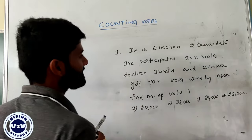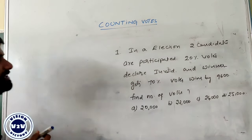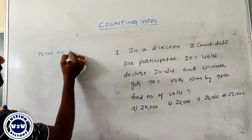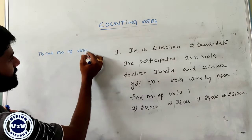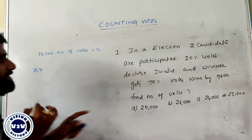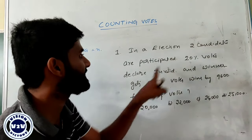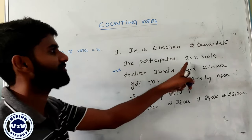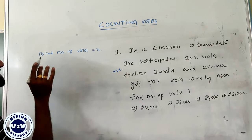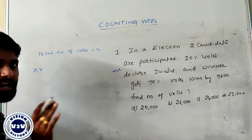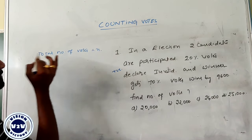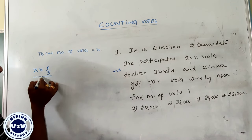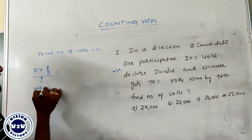In an election between two candidates, 20 percentage votes are declared invalid. First of all, the total number of votes we need to find is equal to x. Out of x, 20 percentage votes declared invalid means we need to consider only 80 percentage for the counting part. So 80 percentage becomes 4 by 5. X is the number of votes and four-fifths of x are the valid votes.